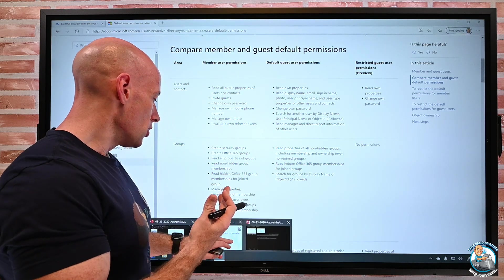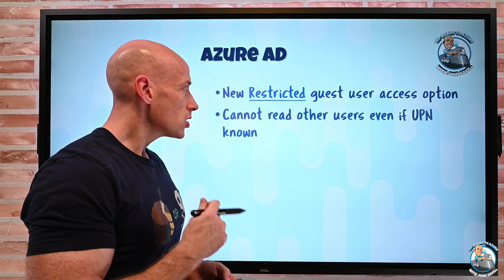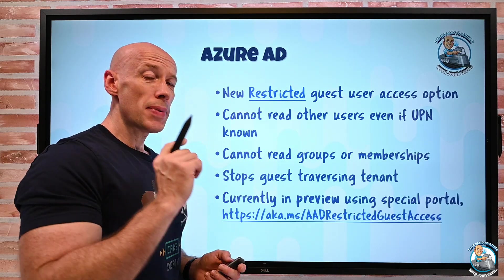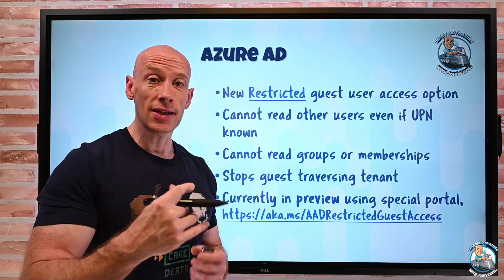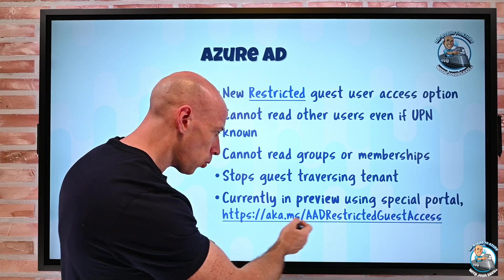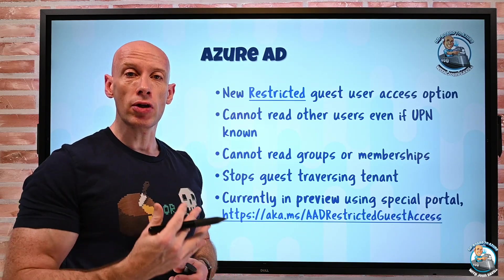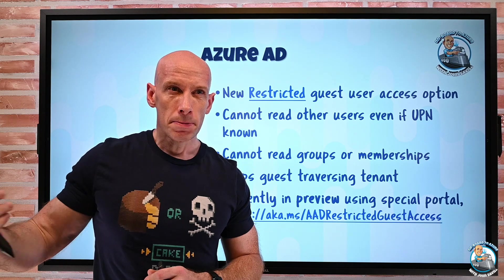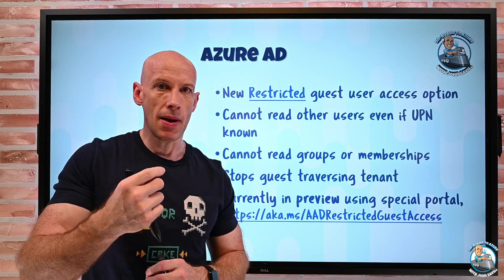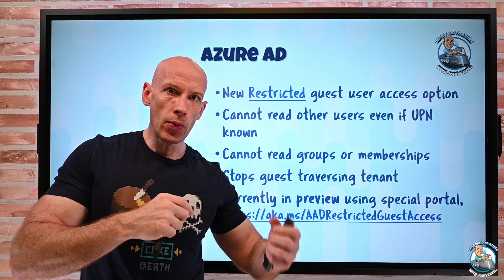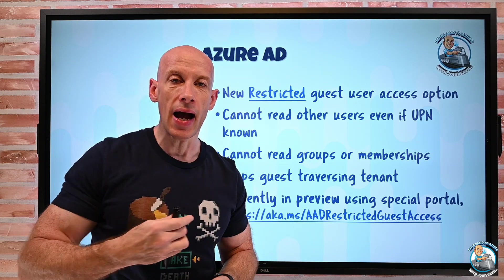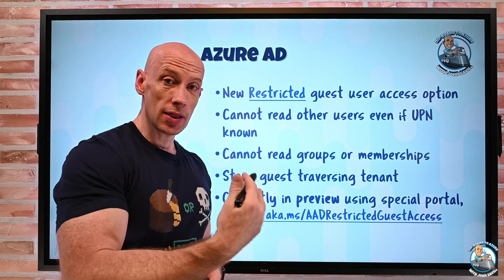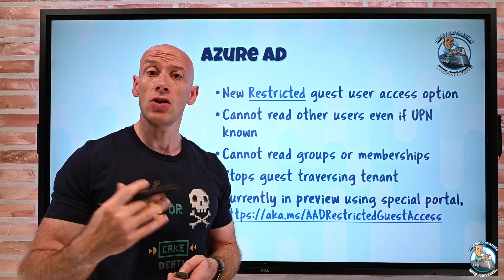So if I'm concerned about a guest being able to get information about my tenant, I can now lock this down with this new capability. It is preview, so the regular Azure portal doesn't yet expose this — I have to go to a special portal to get the restricted option. Be careful though: some collaboration tools expect guests to enumerate groups or see manager info, so test this to make sure it's not breaking other capabilities. If you have a test tenant, go try it out.